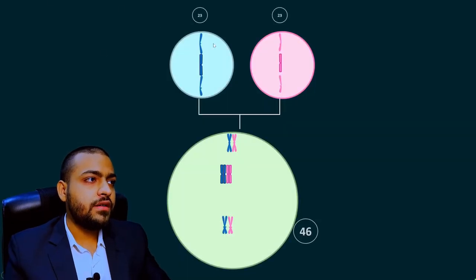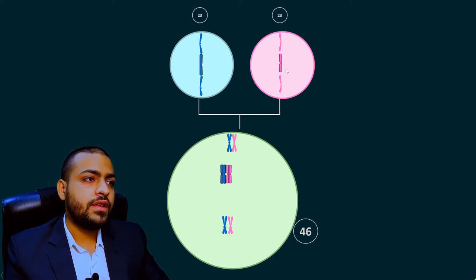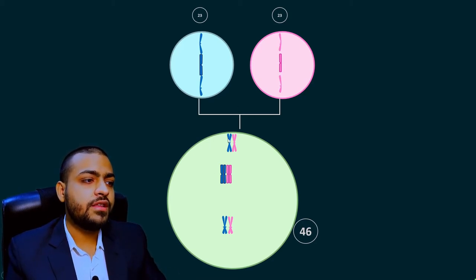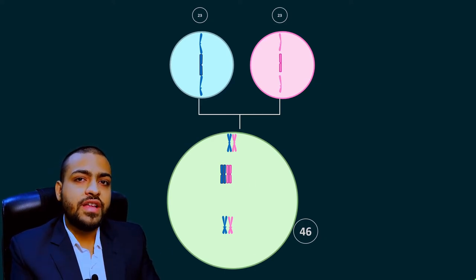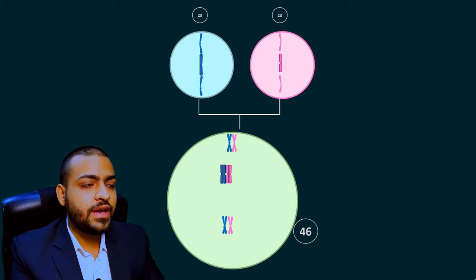Let's suppose that normal gametes are formed — a normal male gamete and a normal female gamete — having a normal number of chromosomes. They will fuse together by the process of fertilization to form a normal single-cell zygote, and this zygote is also normal, having a normal number of chromosomes.